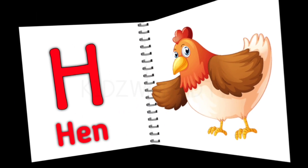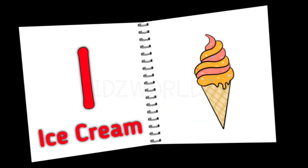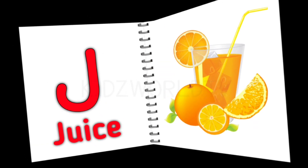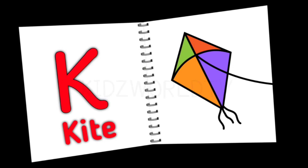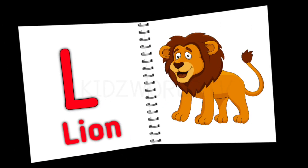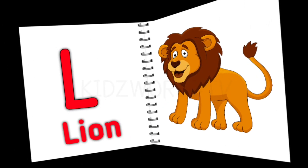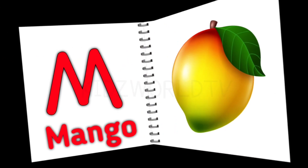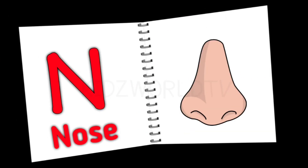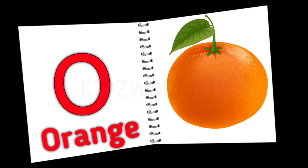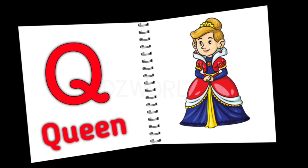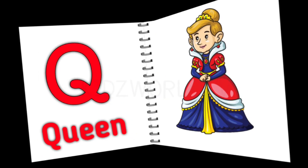E for Elephant. J for Juice. K for Kite. L for Lion. M for Mango. N for Nose. O for Orange. P for Parrot.